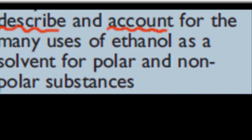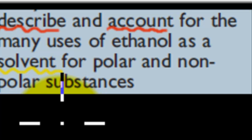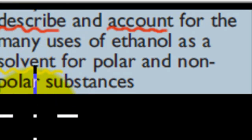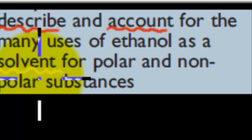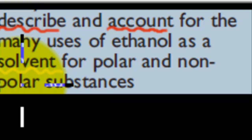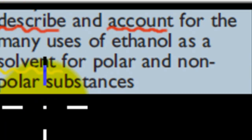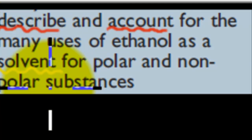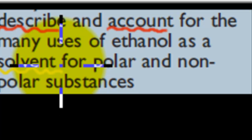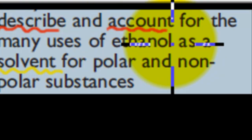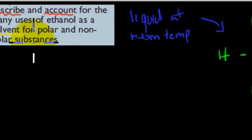Before we start, let's go over some key words. A solvent is something that other things dissolve into — for example, water is a solvent because salt or sugar dissolves in it, making salt or sugar the solute. In this case, we're asking why ethanol is a good solvent — why do things dissolve well in ethanol, and why do both polar and nonpolar substances dissolve in it?